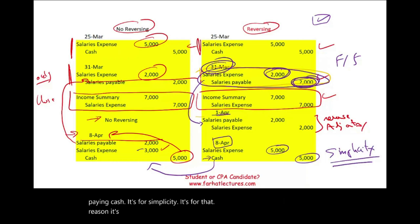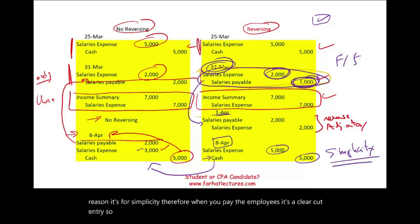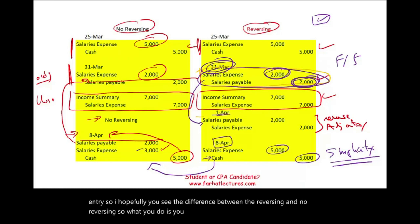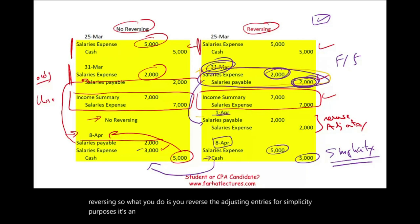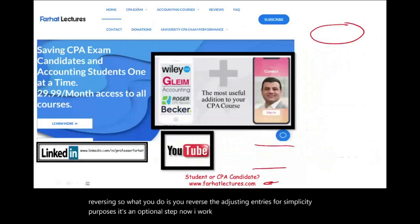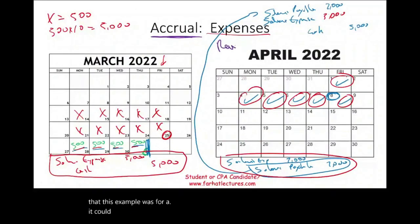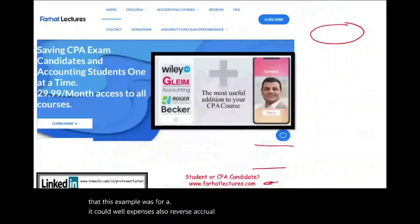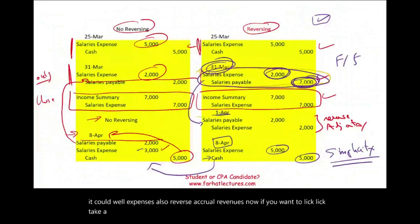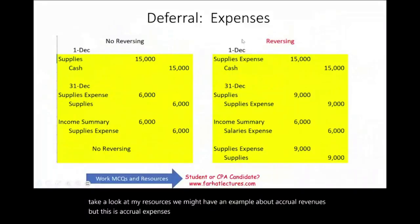So you reverse the adjusting entries for simplicity purposes — it's an optional step. This example was for accrual expenses; you also reverse accrual revenues. Now let's take a look at a deferral, and we're going to work through a deferral expense.